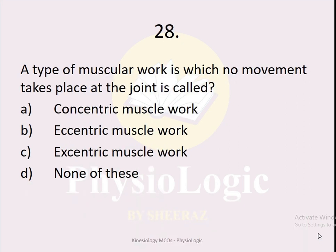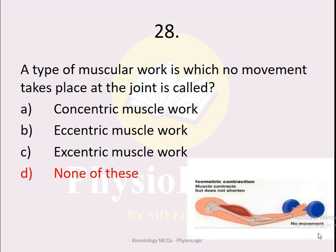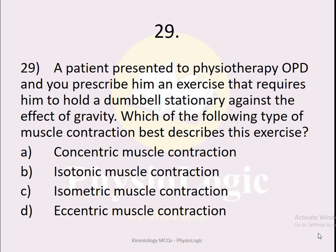MCQ number 28: A type of muscular work in which no movement takes place at the joint is called — option A concentric muscle work, option B eccentric muscle work, option C eccentric muscle work, option D none of these. The correct option is none of these. There are three types of muscle contraction: concentric (shortening), eccentric (lengthening), and isometric (no change in muscle length, no movement). Since the isometric option is not provided, option D — none of these — is correct.